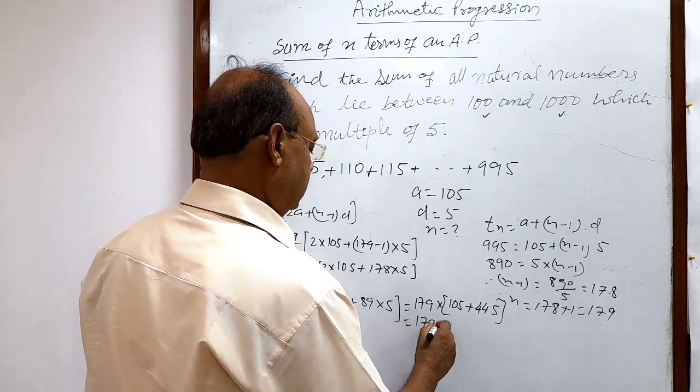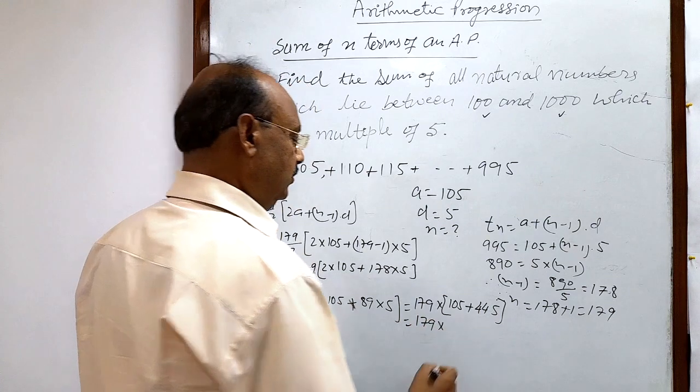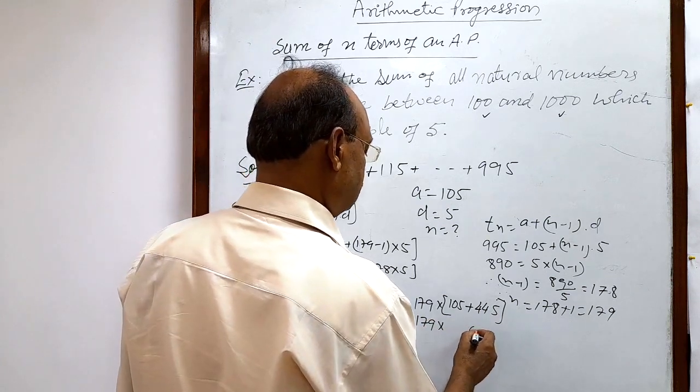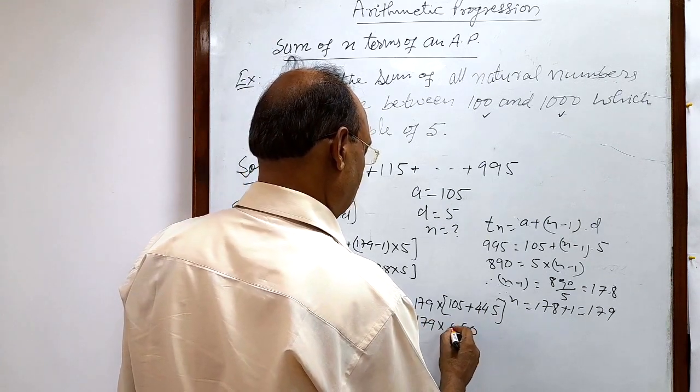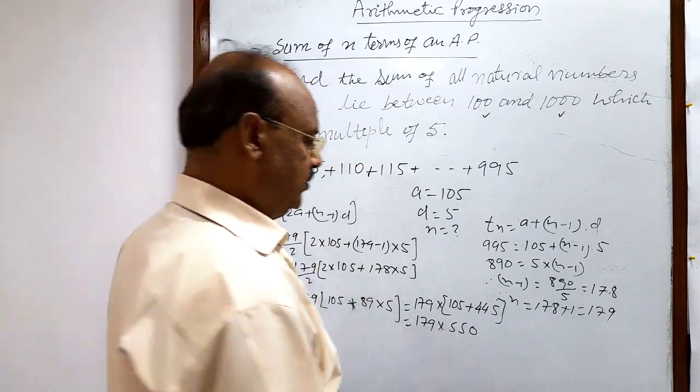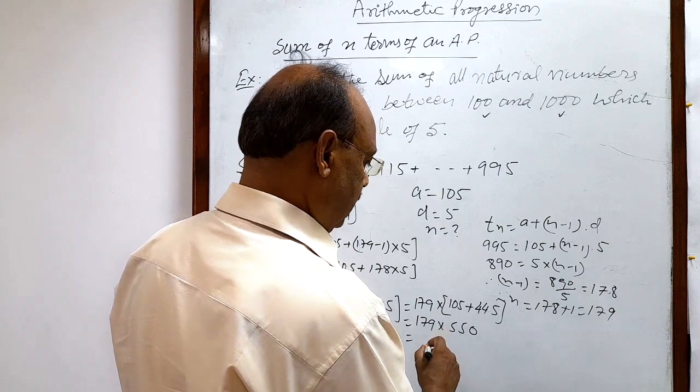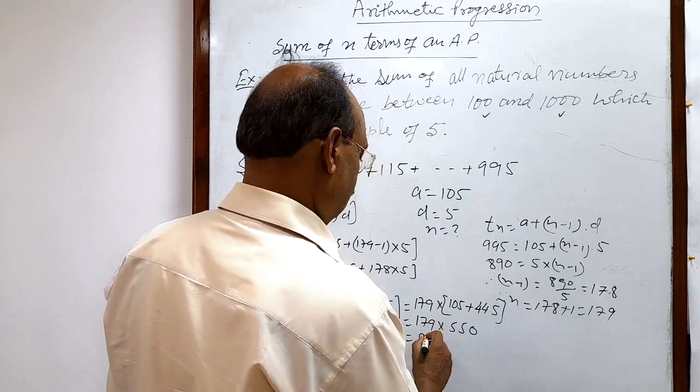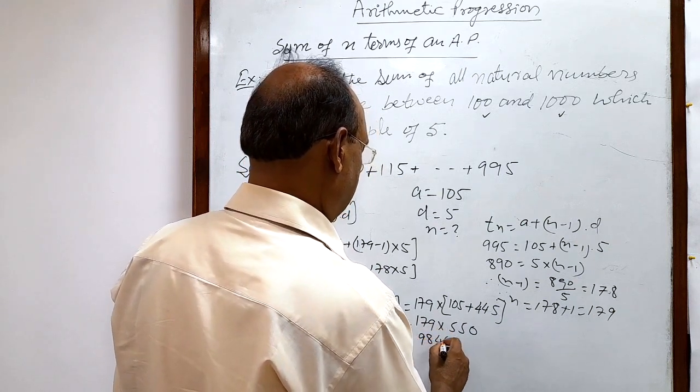So S179 is equal to 98,450. This is the answer here.